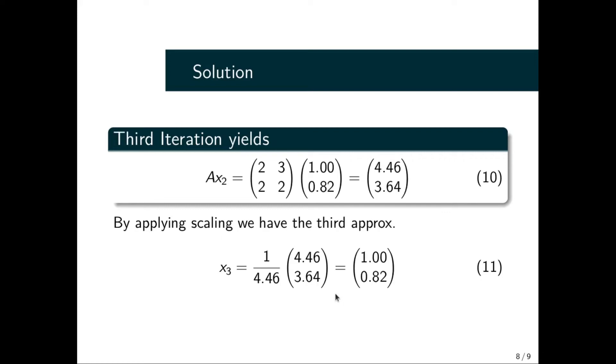From equation (9), having obtained x₂, we multiply Ax₂ to get x₃, which gives us this column vector. We also go ahead to do the scaling and reduce it, which gives us equation (11). So x₃ is equal to (1.00, 0.82), the column vector that we have obtained.